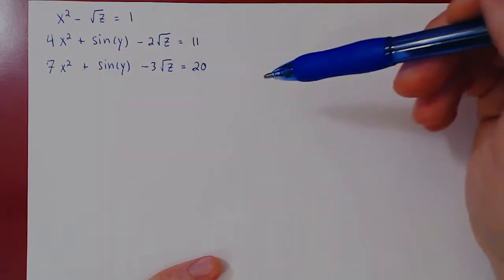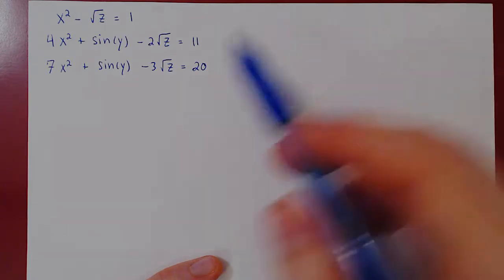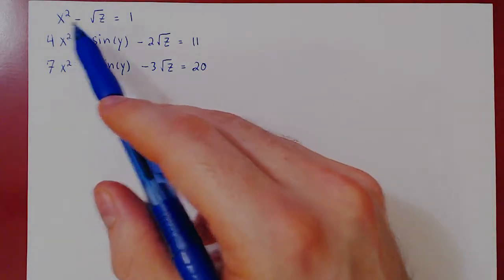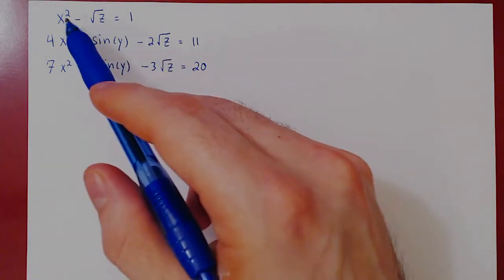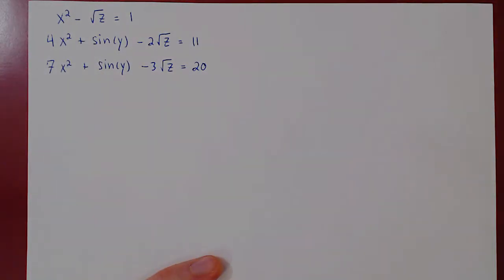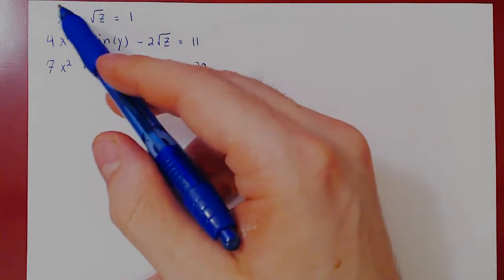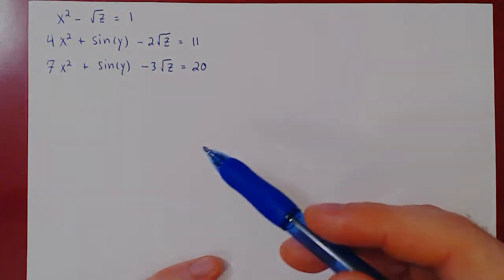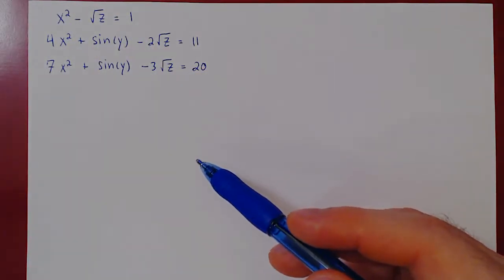Notice that this system is actually not linear. It is in the variables x, y, and z, but it's not just coefficients, real numbers times the variables x, y, and z. x squared, root of z, sine of y. Can we still solve for x, y, and z, even though the system is non-linear?